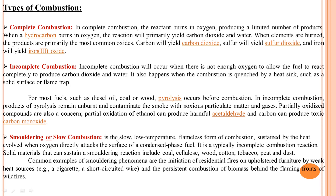Incomplete combustion is opposite to complete combustion. It occurs when there is not enough oxygen to allow the fuel to react completely to produce carbon dioxide and water. It also happens when combustion is quenched by a heat sink, or when moisture or water content is already present in the fuel, preventing it from burning completely. Products after combustion are much higher in this case.